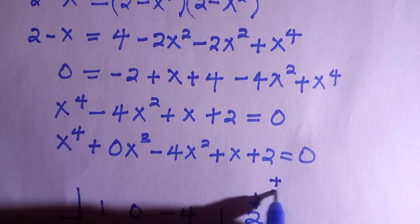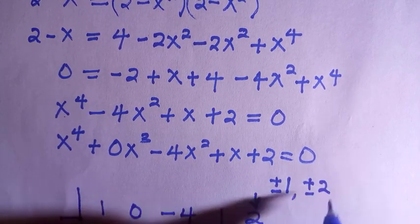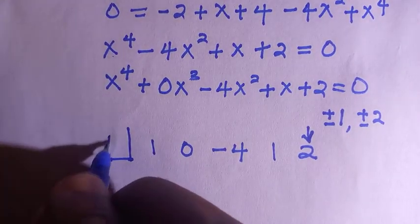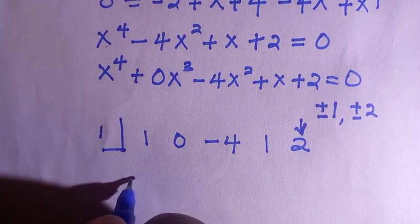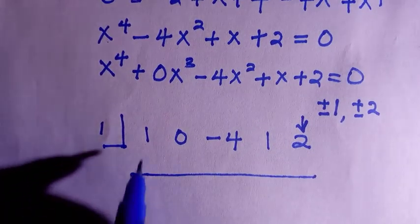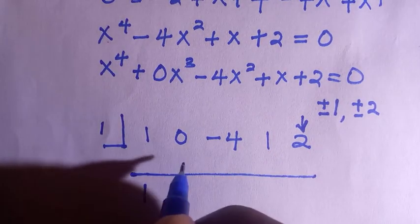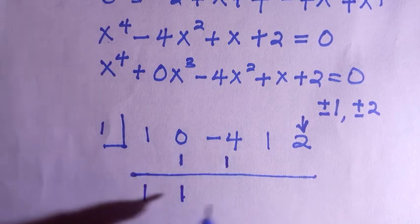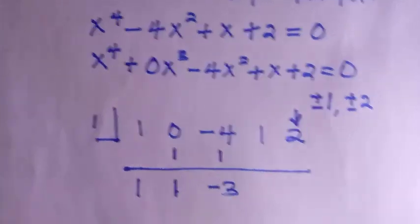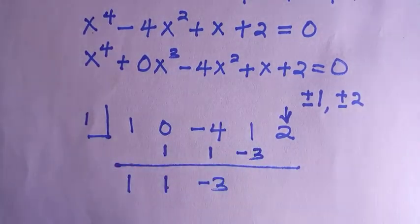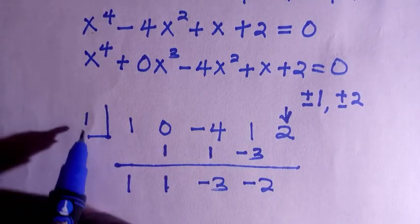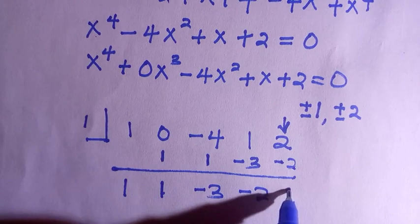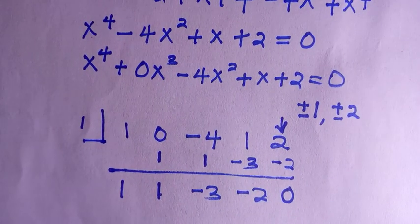To know the correct factors, we consider the constant value 2. The possible factors are plus or minus 1 and plus or minus 2. I've tested these. If we check x equals positive 1: write 1 as is, then 1 times 1 is 1, 0 plus 1 is 1, 1 times 1 is 1, minus 4 plus 1 is minus 3, then 1 times minus 3 is minus 3, giving minus 2, and 1 times negative 2 is negative 2. Since the last term equals negative 2, x equals 1 is a root.